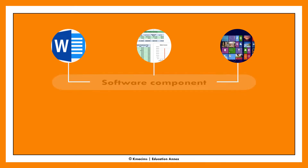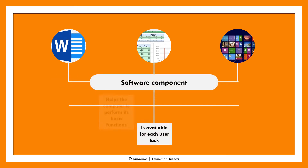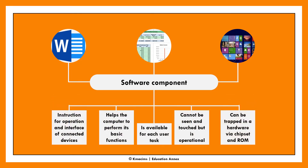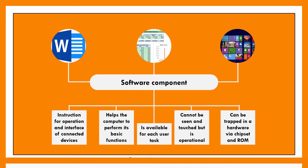The software component cannot be seen or touched, but is available and operational within the computer system. It contains instructions for the proper operation and interfacing of all connected hardware devices, making it easy and possible for the computer to perform its five basic functions. It is also available for each task a user wants to accomplish — for example, a word processor for typesetting and printing. Software may be embedded in hardware through a chipset or ROM during production, or it can be installed by a user for a specific task. A software component can be repaired, upgraded, or uninstalled.